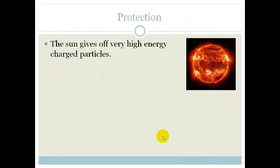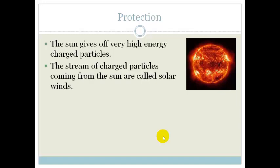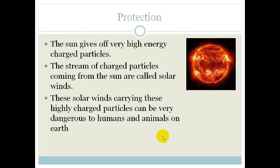So now, why is the Earth's magnetic field so important? The Sun gives off very high energy charged particles. The stream of charged particles coming from the Sun is called solar winds, and these solar winds carry these high charged particles, and it can be very dangerous to humans and animals on Earth.